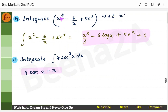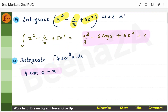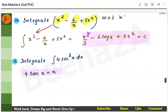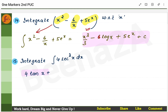Next problem: find the integral of an expression with multiple terms — x², 6/x, 5eˣ, and 4sec²x. Find each integral separately. The integral of x² is x³/3. Keep 6 outside; the integral of 1/x is log x. Keep 5 outside; the integral of eˣ is eˣ itself. Keep 4 outside; the integral of sec²x is tan x. Don't forget plus c.